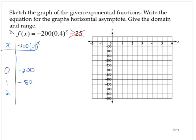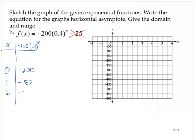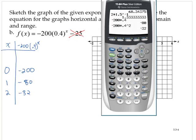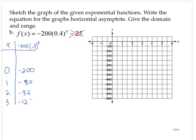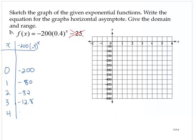If x was 2, we would have negative 200 times 0.4 to the second power. Negative 32. If x was 3, negative 200 times 0.4 to the third, negative 12.8. If x was 4, negative 5.12.